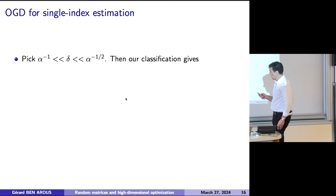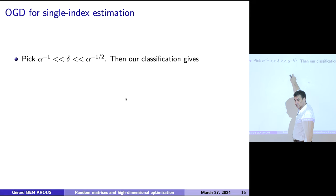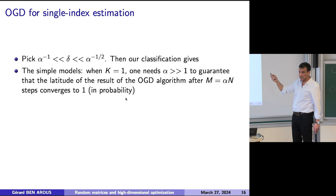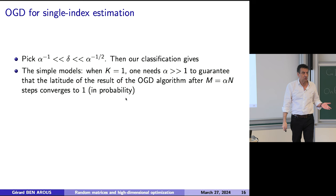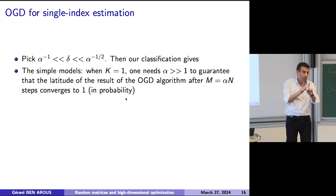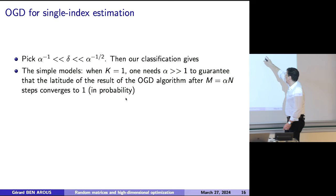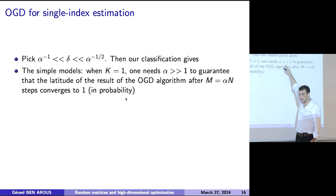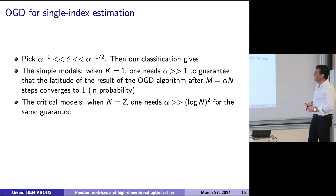Here's the result I mentioned more vaguely yesterday. You have to choose your step size between alpha minus one and alpha minus one-half. When the information exponent is one, the only thing you need is alpha to be much larger than one, so m to be much larger than n, to guarantee that the latitude after m = alpha*n steps converges to one — it converges to the north pole. So you recover the signal fully. When the information exponent is two, you need alpha to be much larger than log(n) squared, so m has to be much larger than n*log(n)^2.